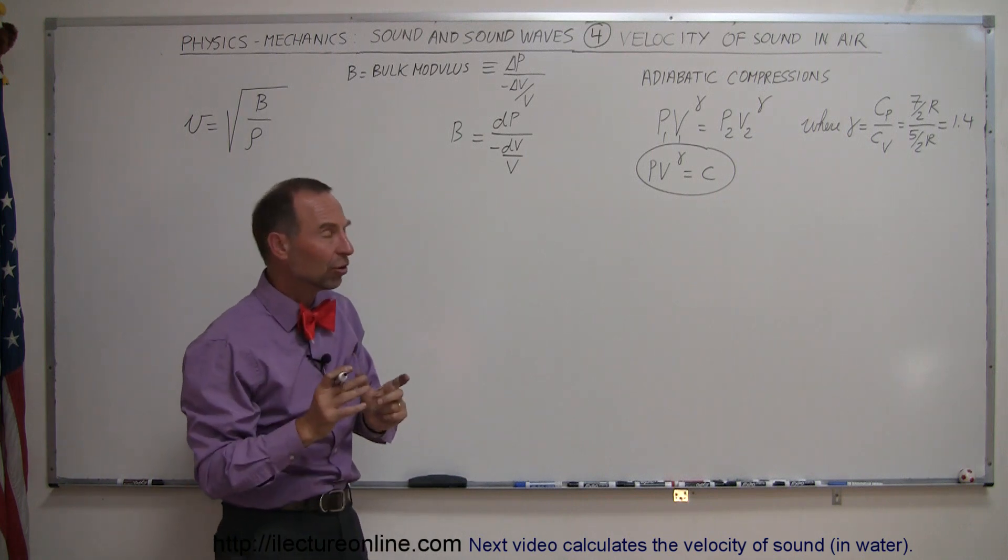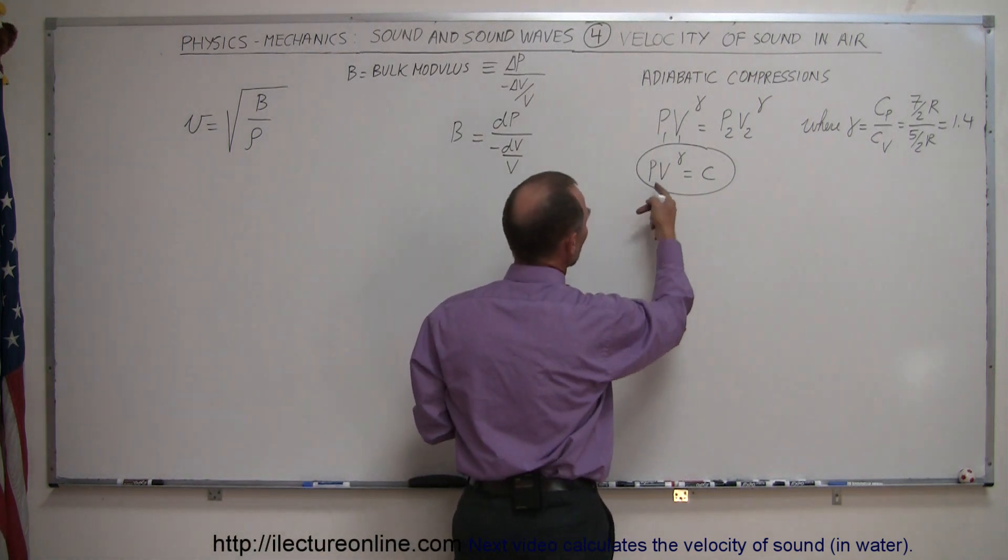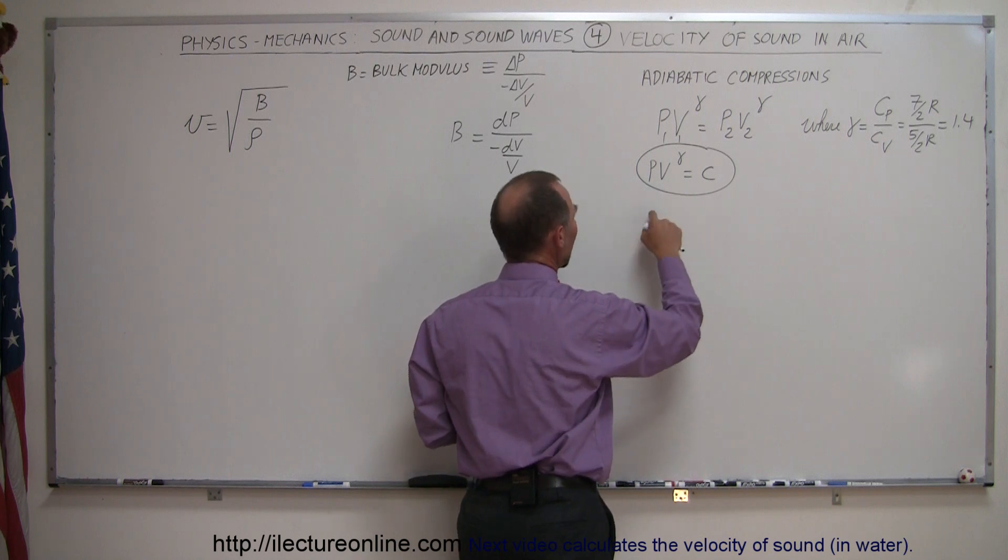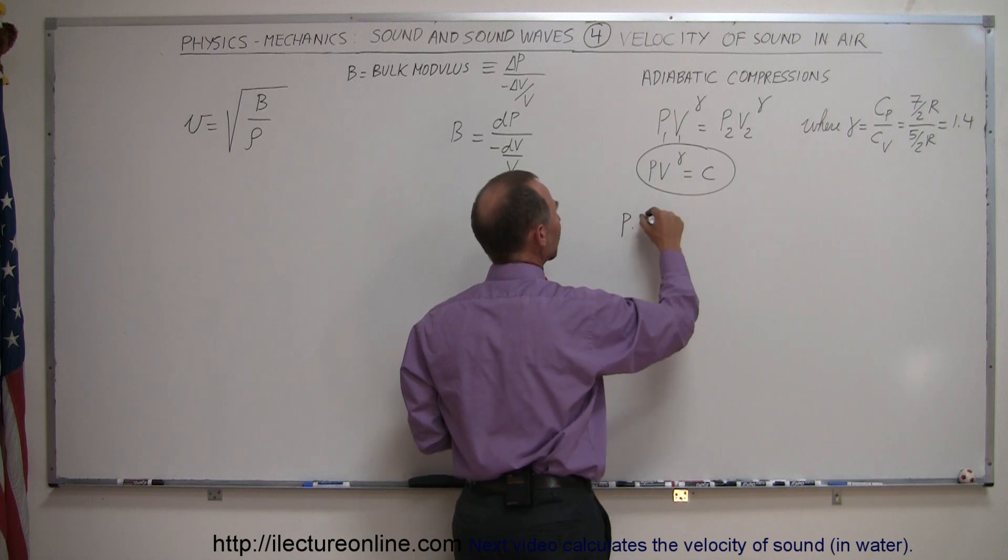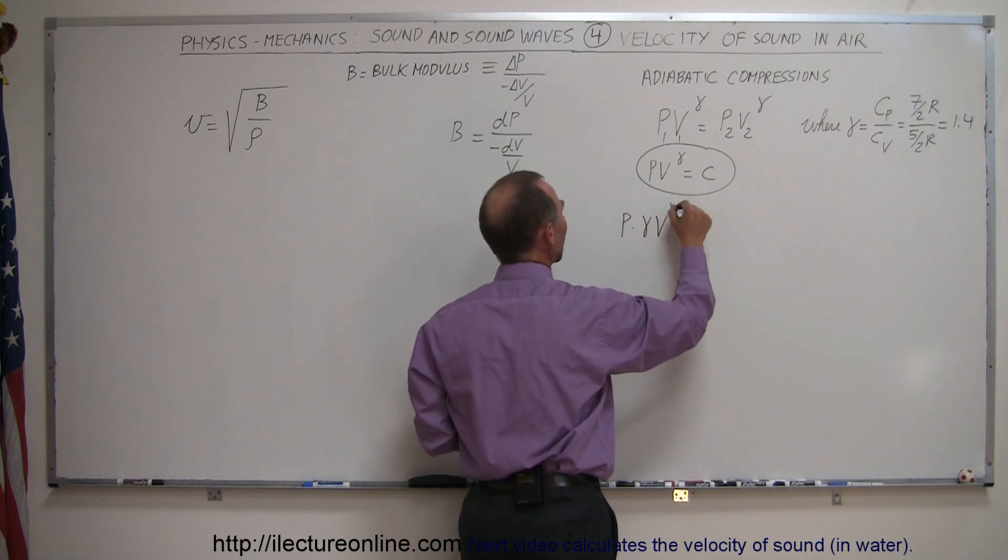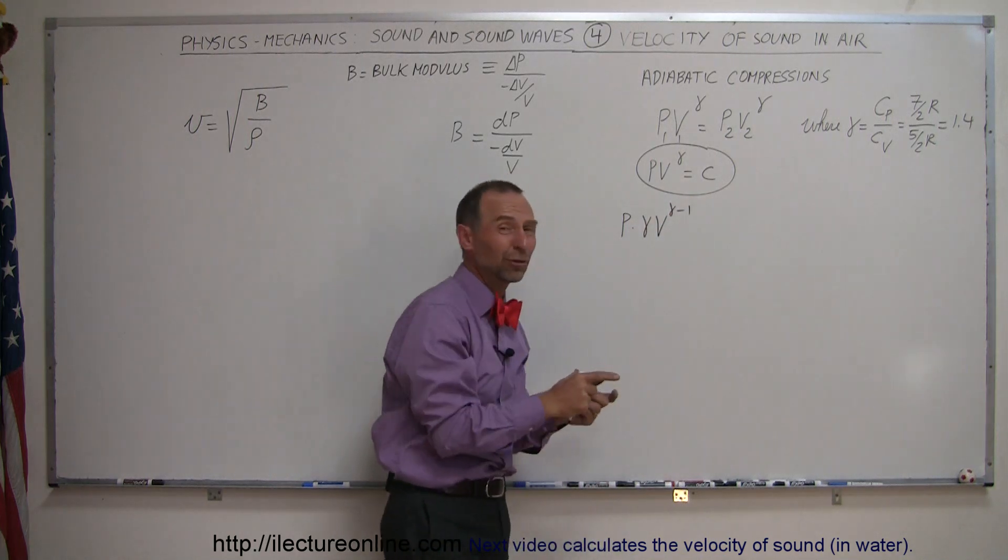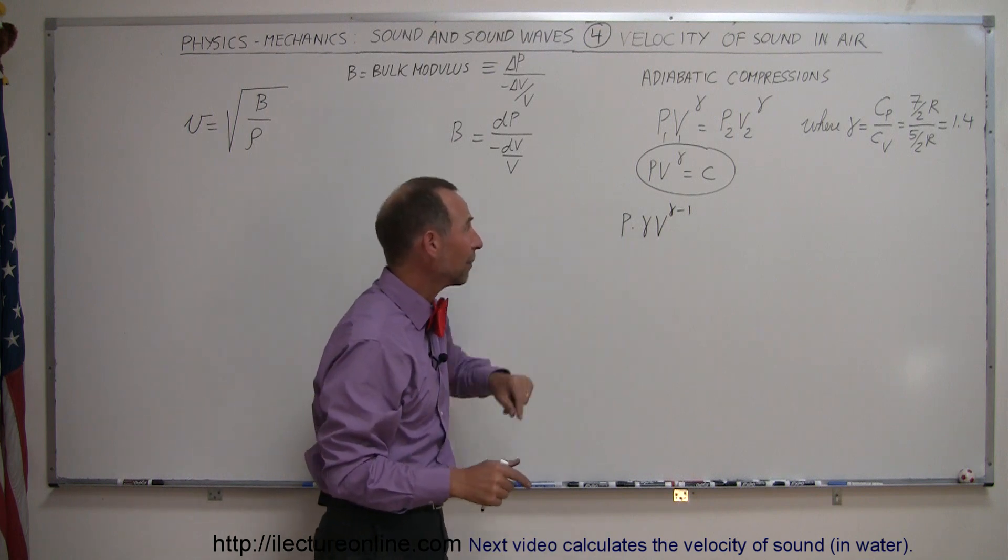If we take the differential of both sides, that's basically the derivative of both sides without the denominator. We take the first, P, times the differential of V to the gamma, which is gamma times V to the gamma minus 1, so that's simply the derivative or the differential of V to the gamma,